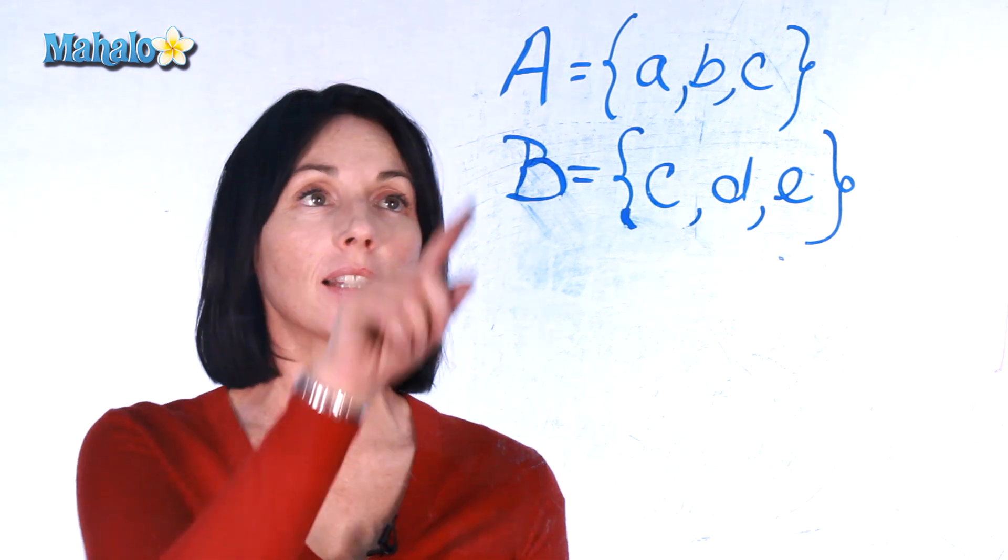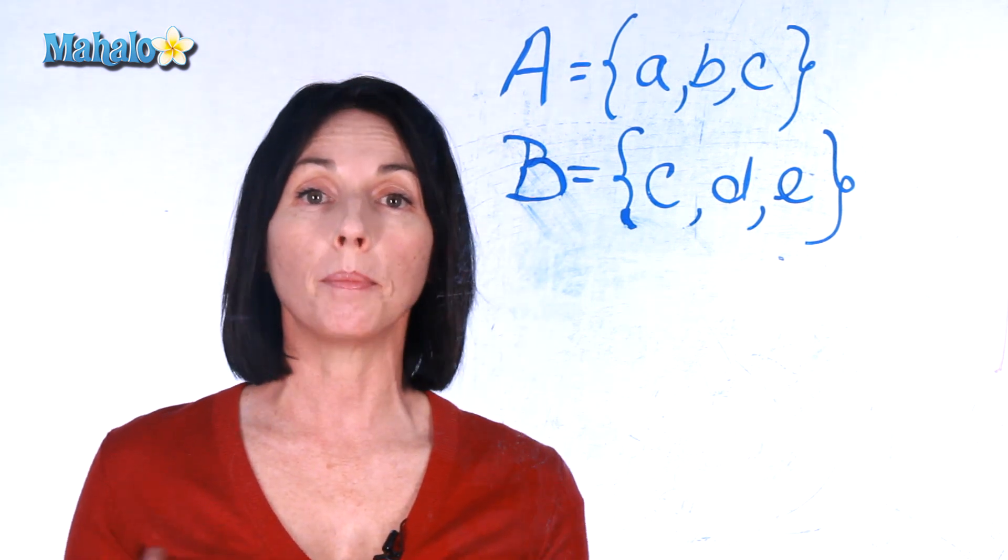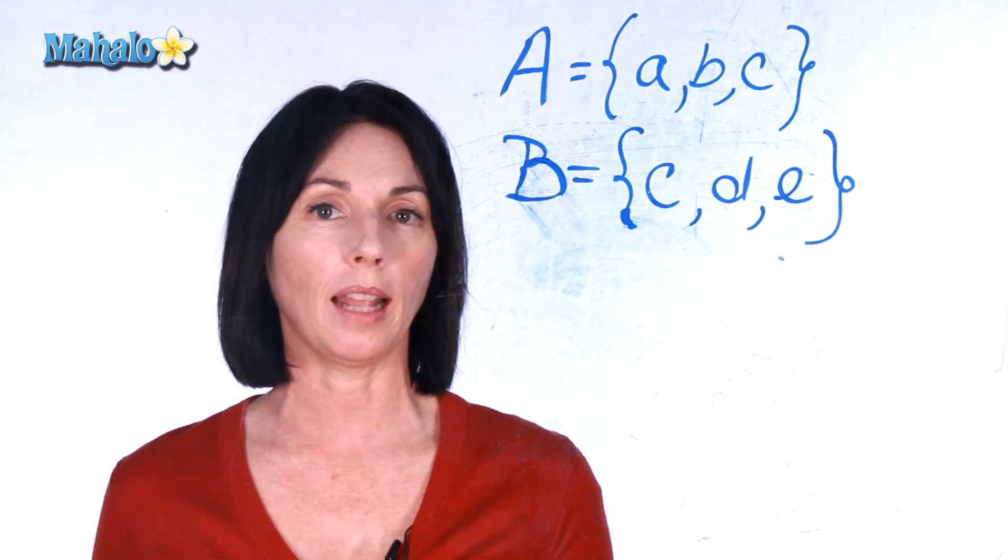So we have two sets here, set A and set B. When we take the union of two sets, that means we combine all their elements together, but we don't duplicate elements.